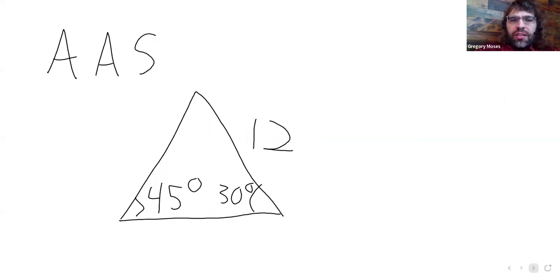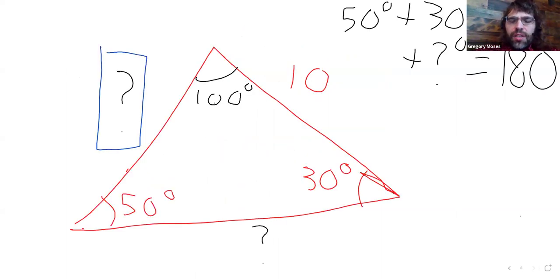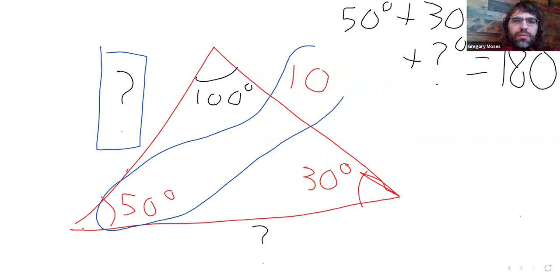So in the ASA case, in the AAS case, and in the SSA case, you see that 50 degrees and that 10. So why is this useful to us?